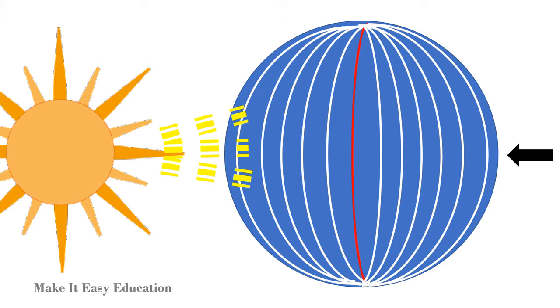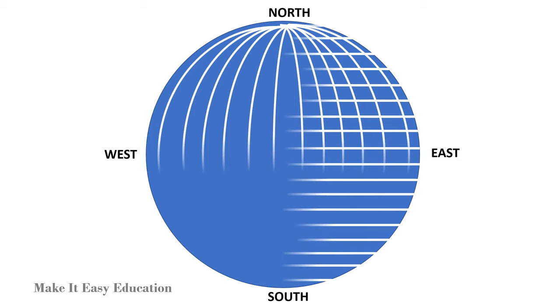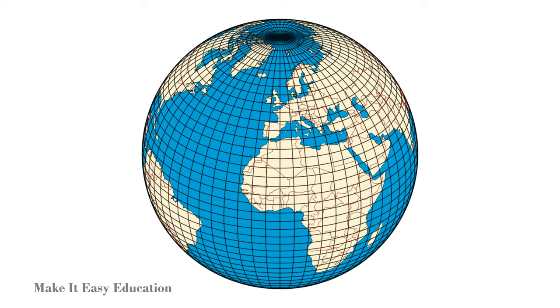The latitude and longitude together form a grid. The grid gives us the coordinates on the earth to find any location on the earth.